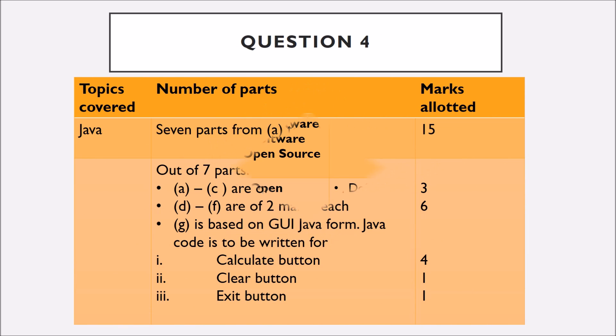Question number 4 is entirely based on Java and it has 7 parts. Out of 7 parts, Part A to C are of 1 mark each, D to F are of 2 marks each and G is based on GUI Java form. Java code is to be written for Calculate button, Clear button and Exit button.